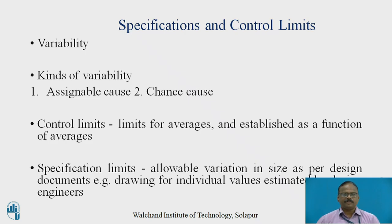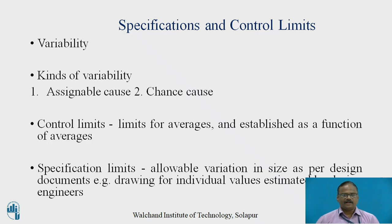Chance cause is relevant with the process — it is inevitable in the process. Chance cause could be because of a simple play between the nut and bolt, which leads to different dimensions. In order to understand the specifications and control limits, we must also know what a control limit is. Control limit is nothing but limits for averages, established as a function of averages.